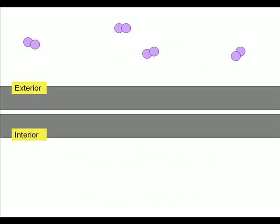We're looking at a cell and its surroundings, ignoring all molecules except the purple oxygen molecules. As you can see, there are four molecules on the outside and none on the inside of the cell,